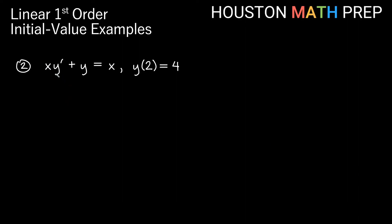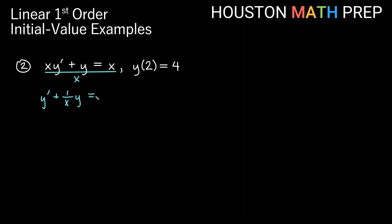Looking at our second example: xy prime plus y equals x, and our condition is y of 2 equals 4. The first thing to notice is that this linear equation is not in normal form — we don't just have y prime in front, so we need to divide everything by x to get the correct integrating factor. That gives us y prime plus one over x times y equals 1, and from here we find our integrating factor.